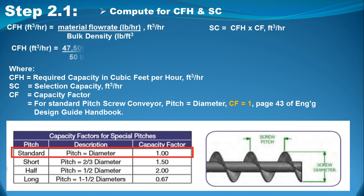Computing CFH: 47,500 pounds per hour divided by 50 pounds per cubic foot gives a CFH of 950 cubic feet per hour. The selection capacity EC equals CFH times CF. Since CF is 1, the selection capacity is also 950 cubic feet per hour.